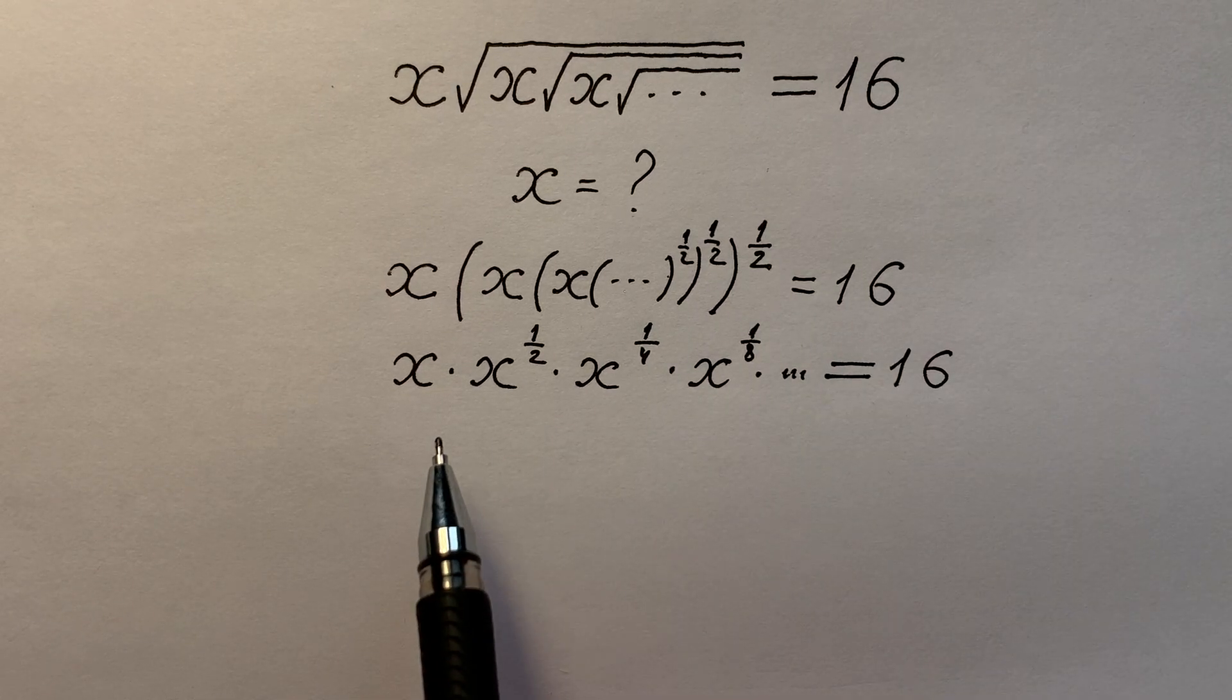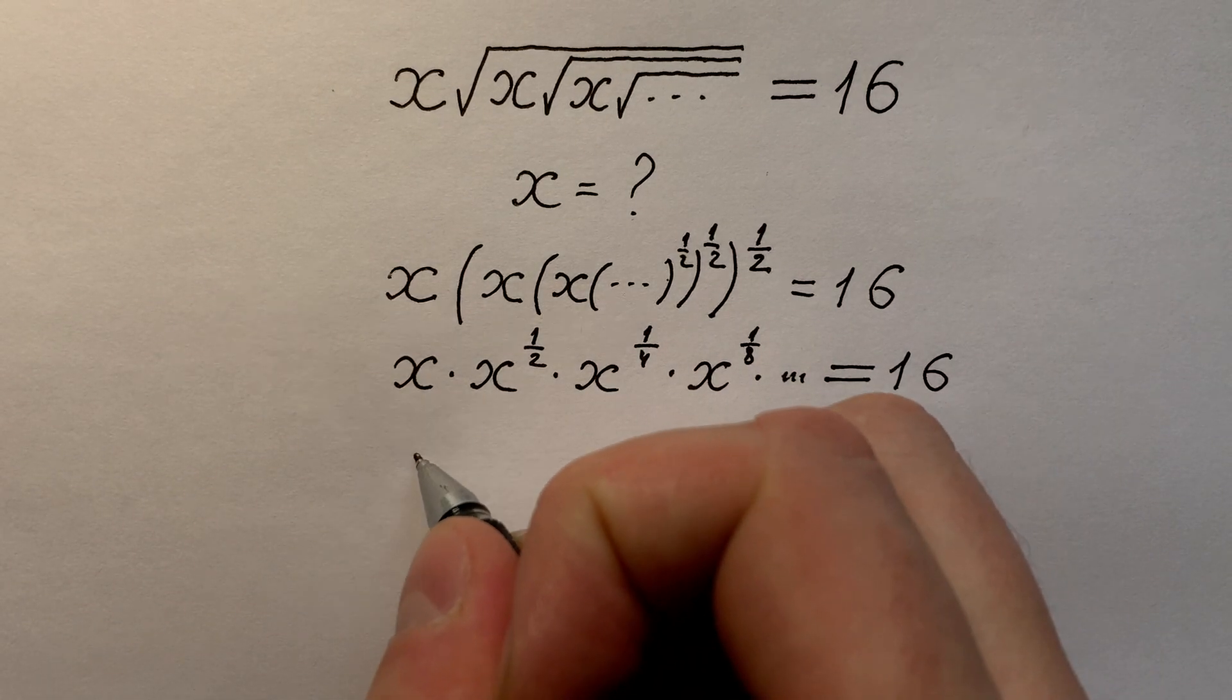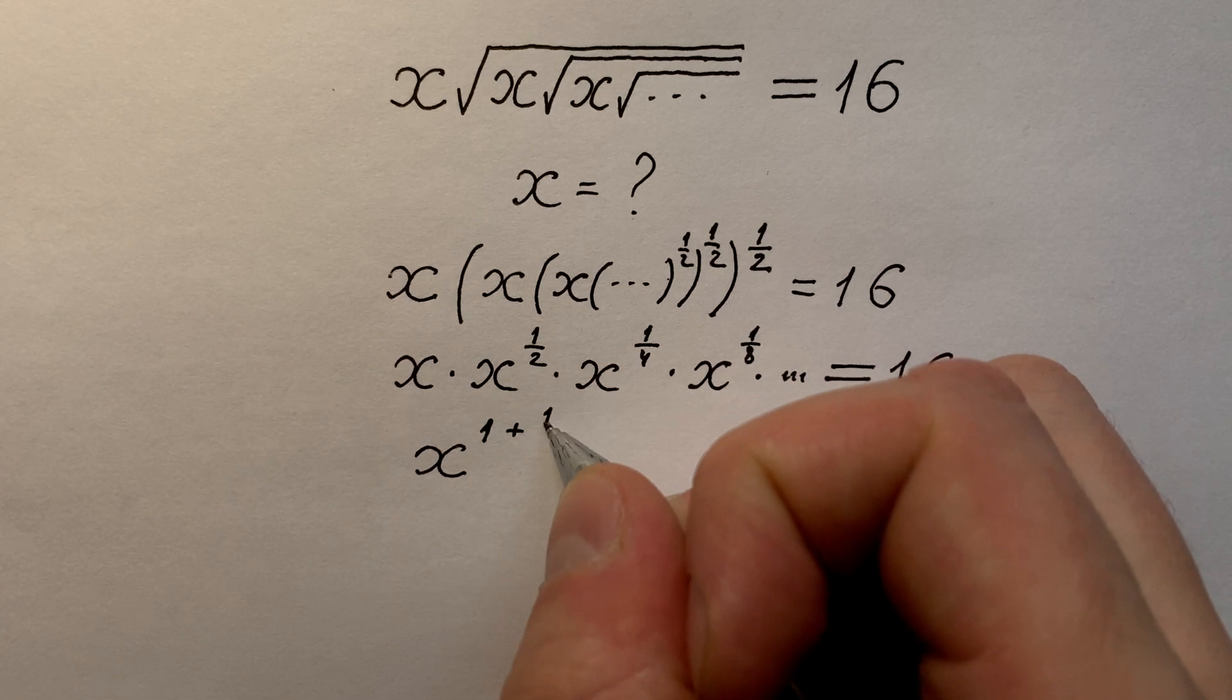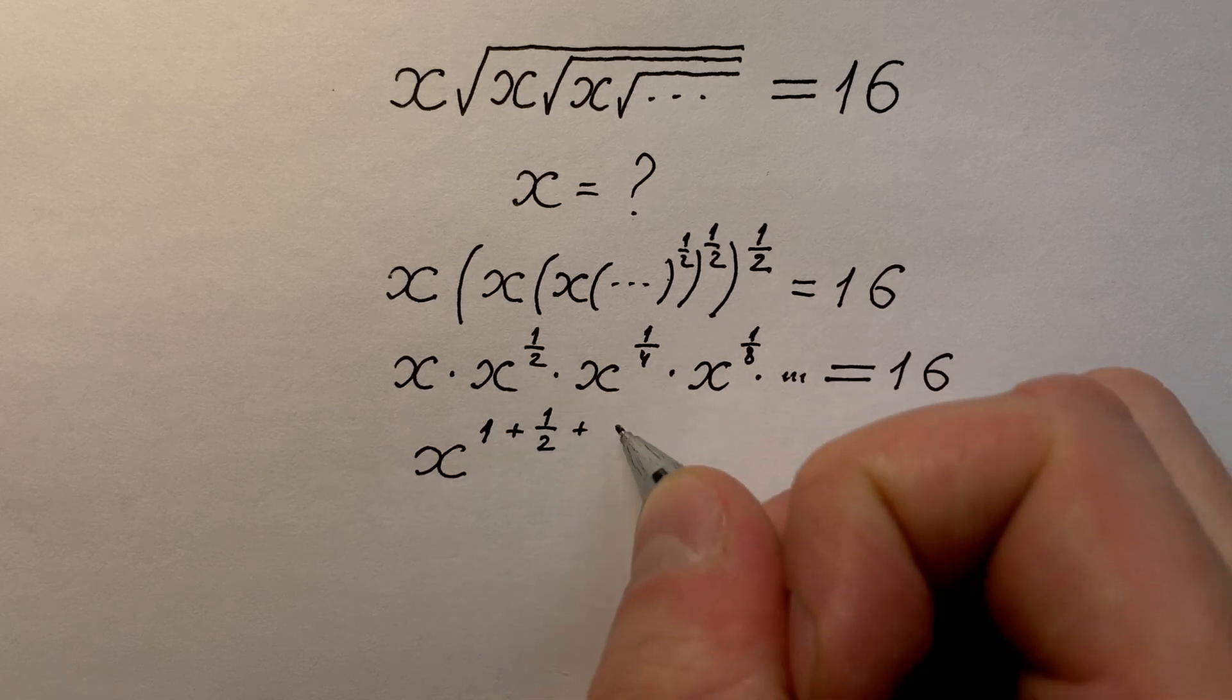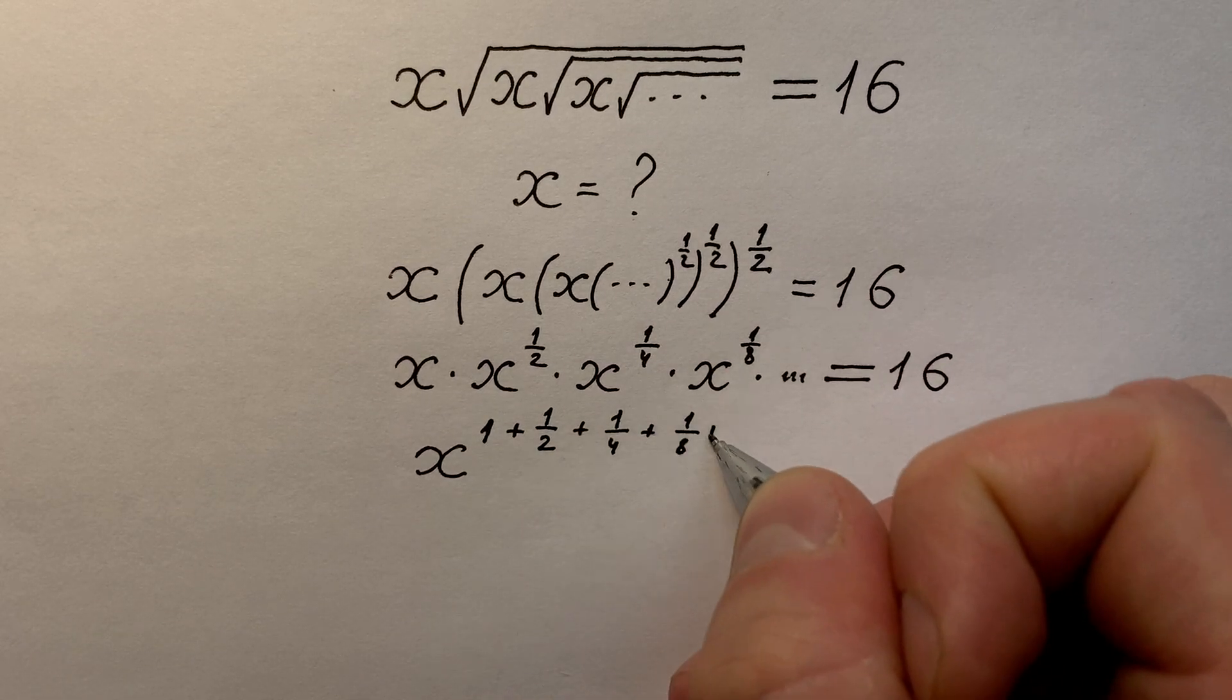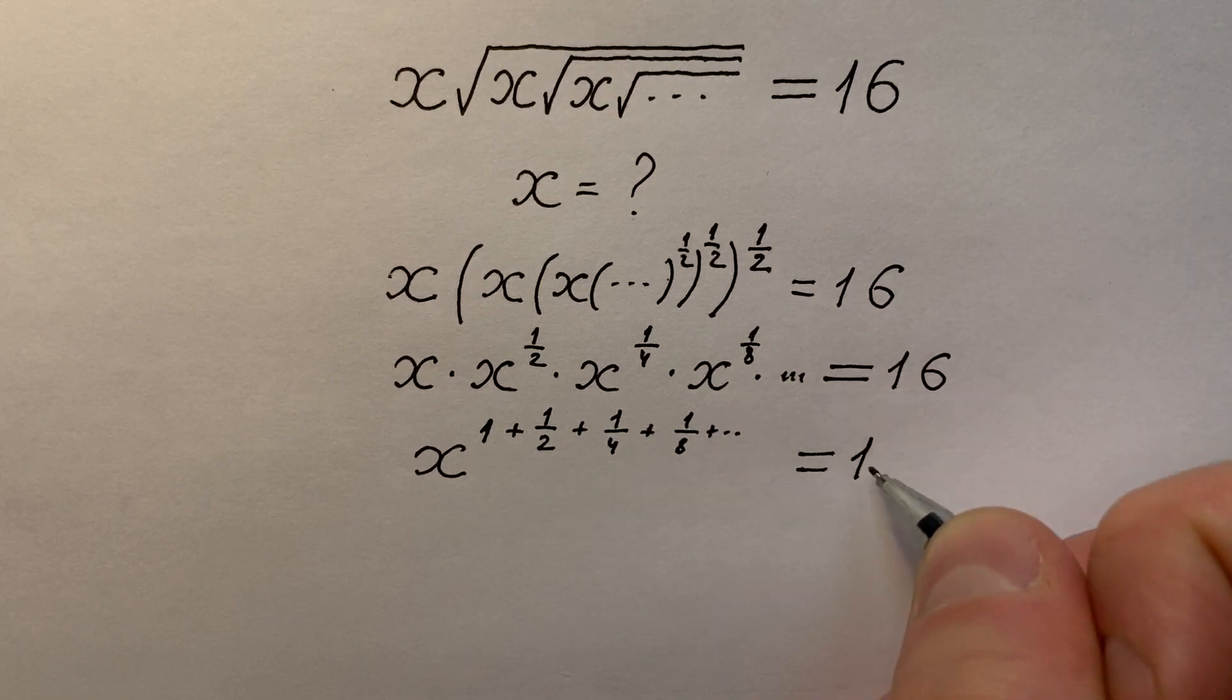And knowing properties of powers, we can write left side like x to the power of 1 plus 1 divided by 2 plus 1 divided by 4 plus 1 divided by 8 plus and some others, and it equals to 16.